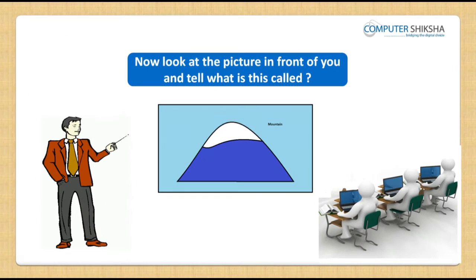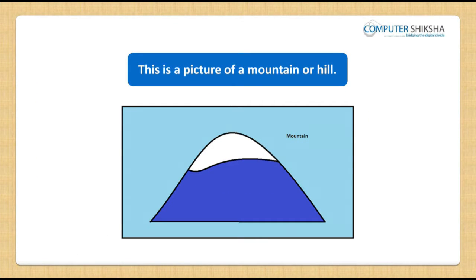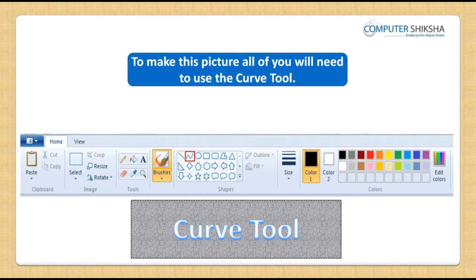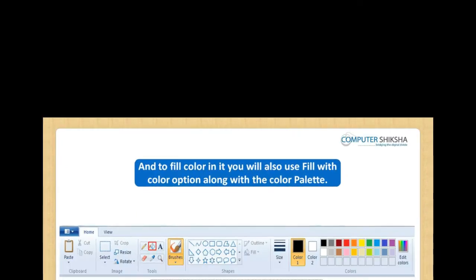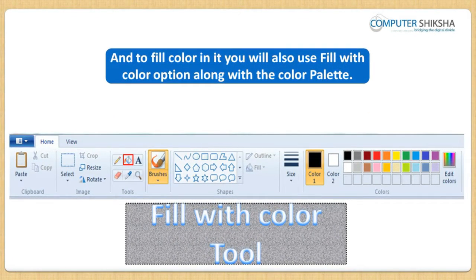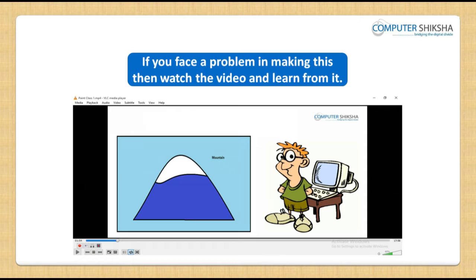Now look at the picture in front of you and tell what it is called. This is a picture of a mountain or hill. Do you know how you will make this picture? To make this picture, you will use the curve tool and the line tool, and to fill color in it you will also use the fill with color option along with the color palette. Go ahead and make this picture, and if you face a problem, then watch the video and learn from it.